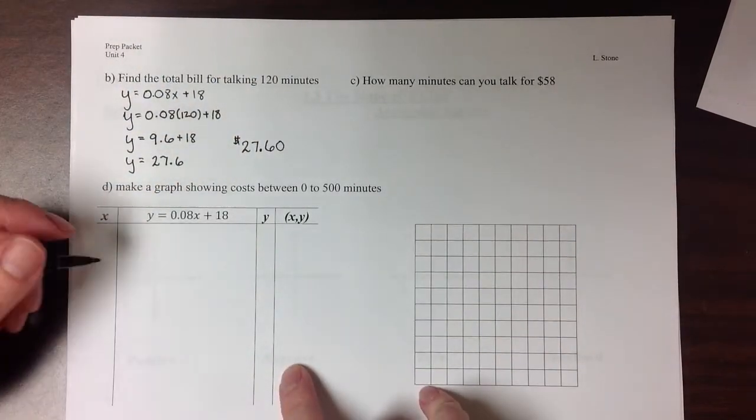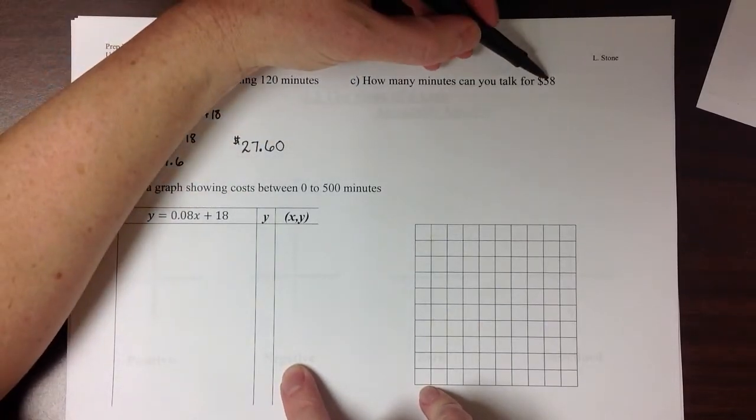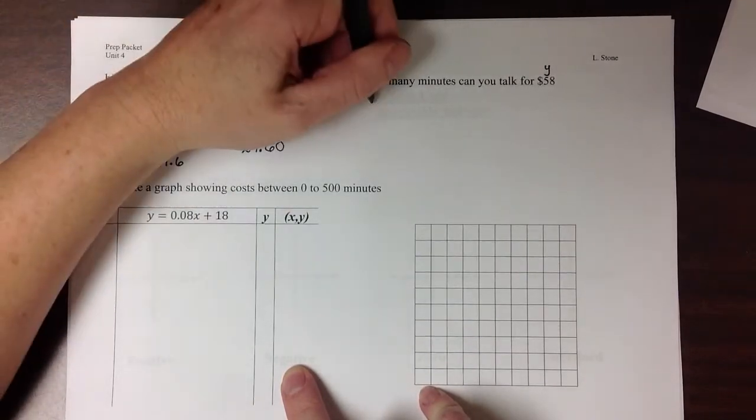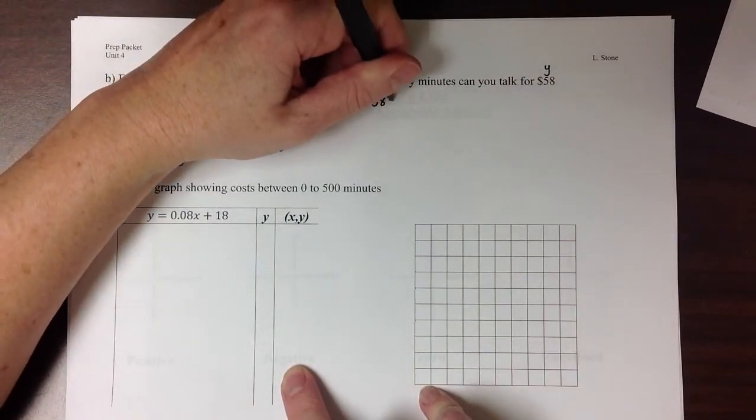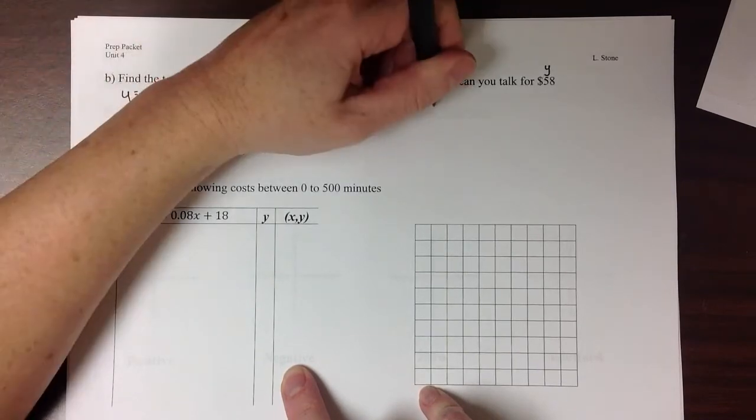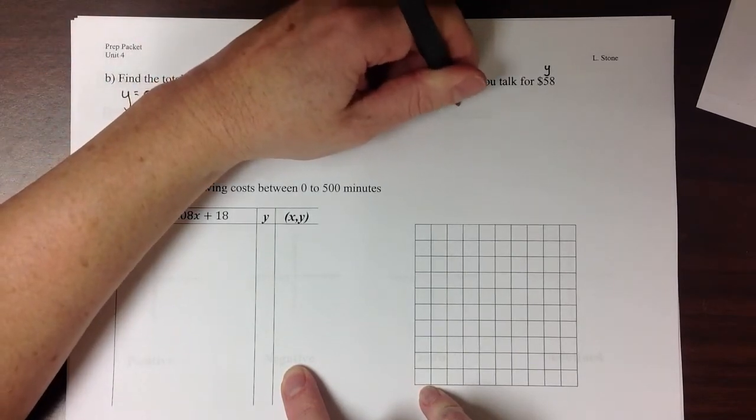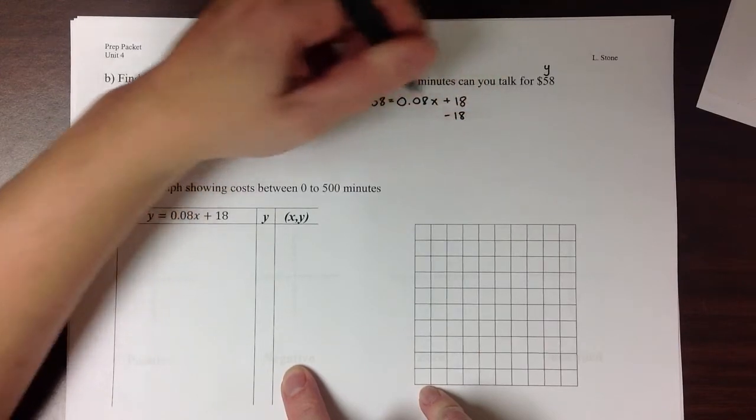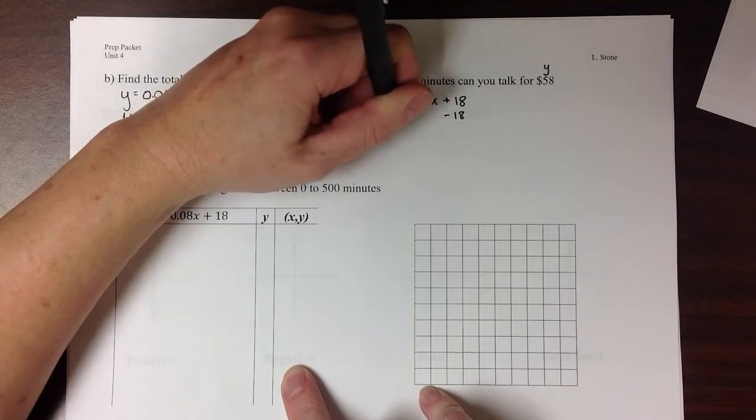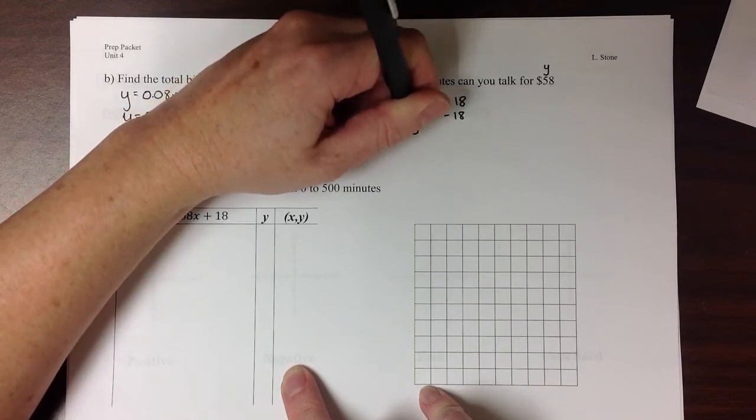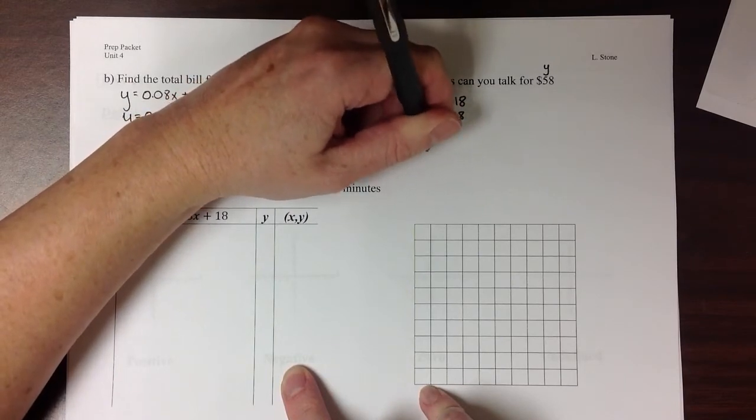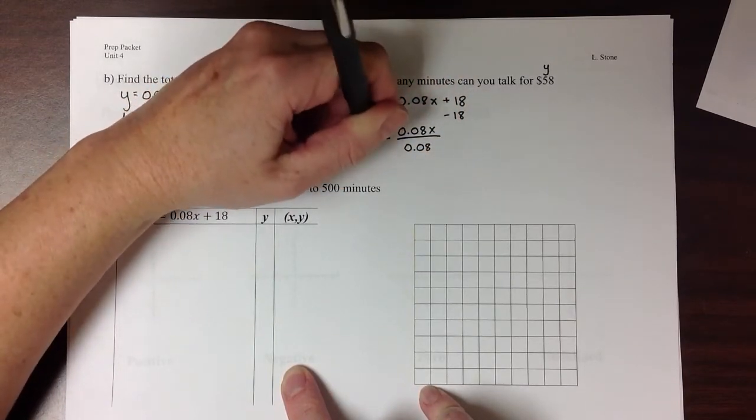How many minutes you can talk for $58? So $58 is our y in this case, our total bill. We're going to have 58 equals 0.08x plus 18. I'll subtract 18 from both sides. That gives me 40 equals 0.08x. Dividing by 0.08 on both sides.